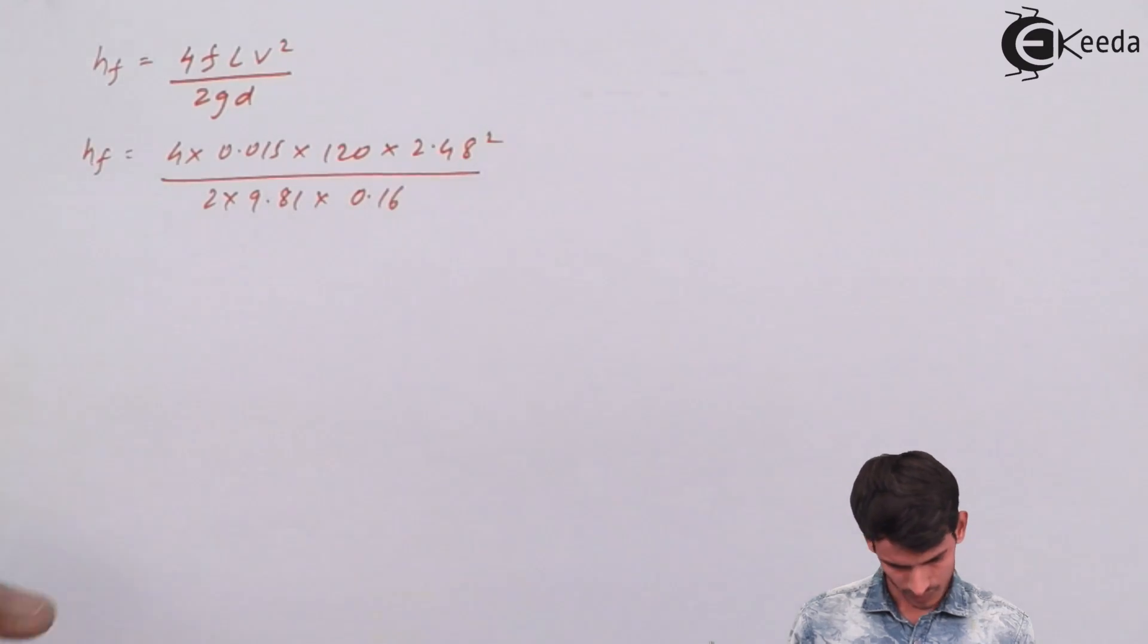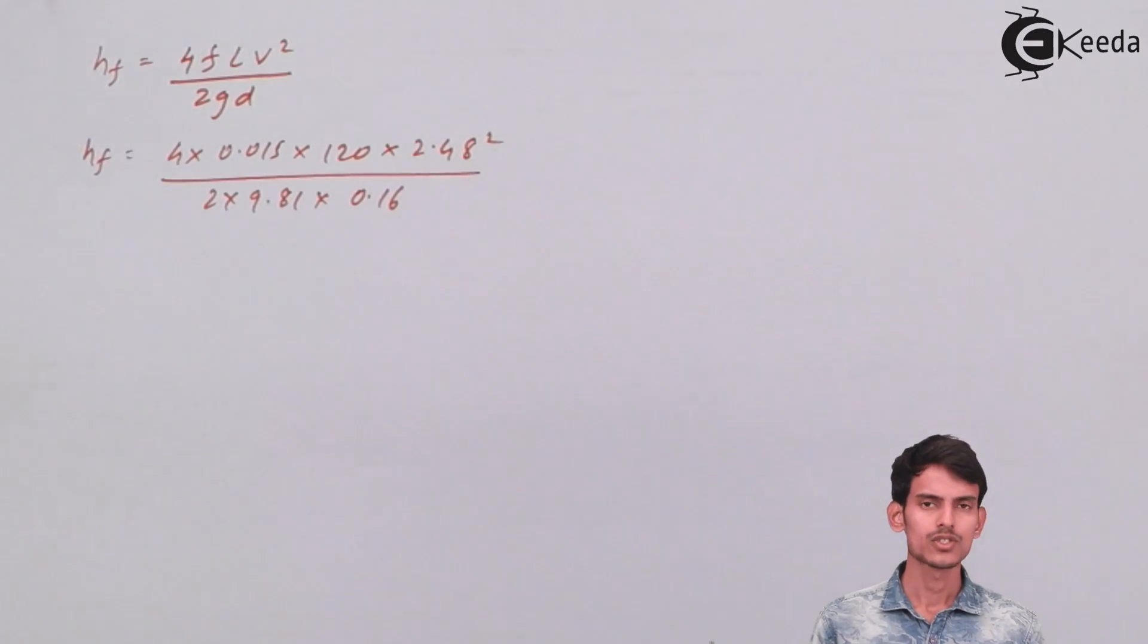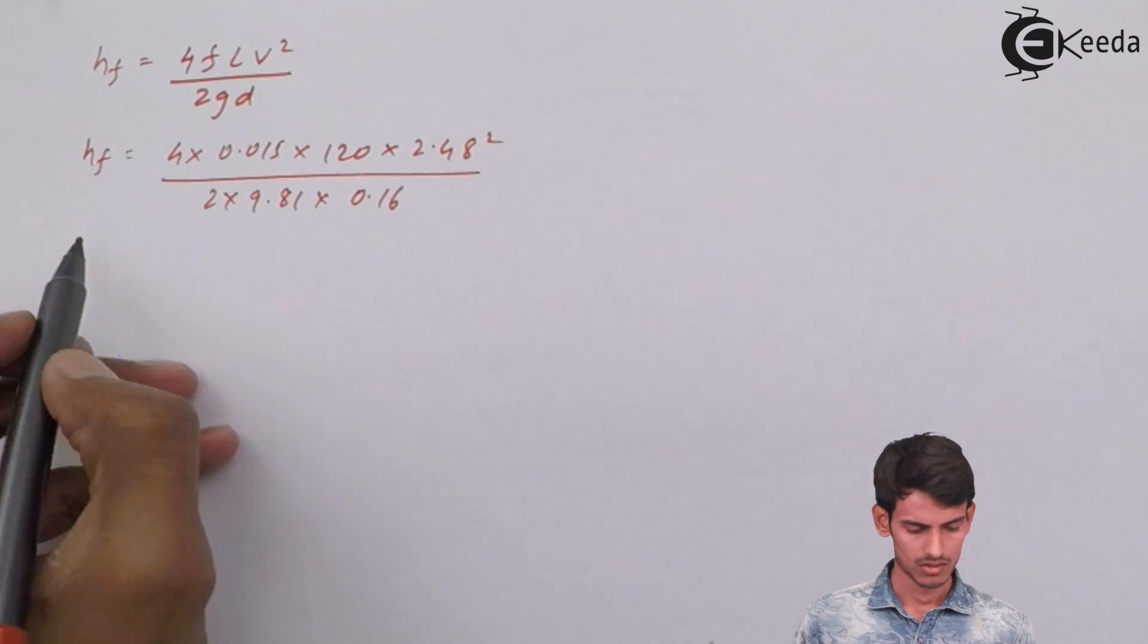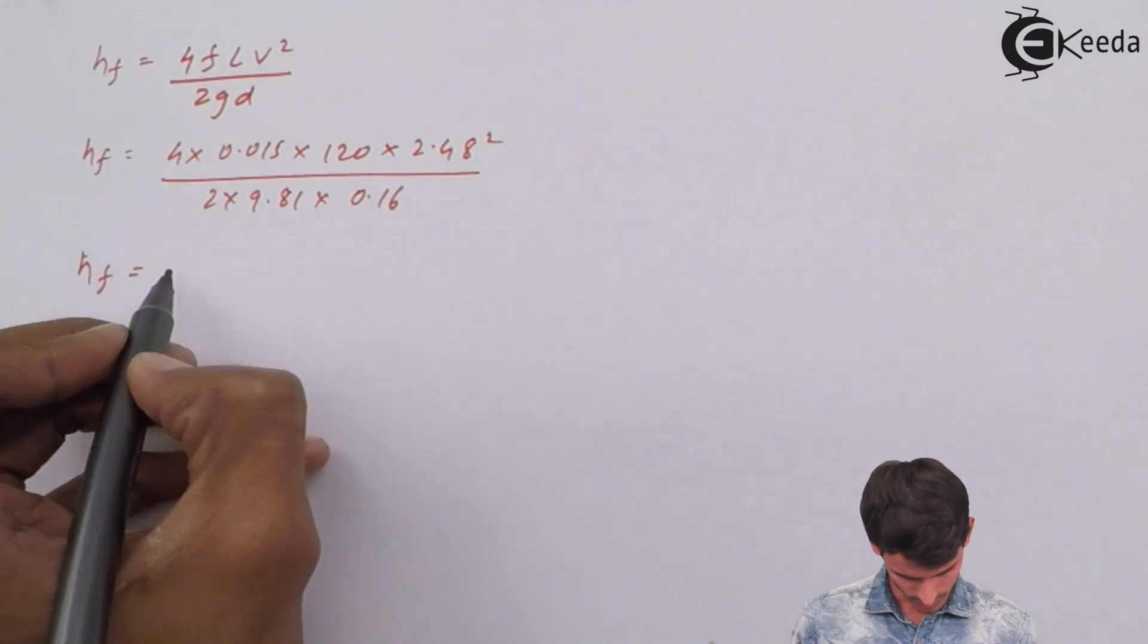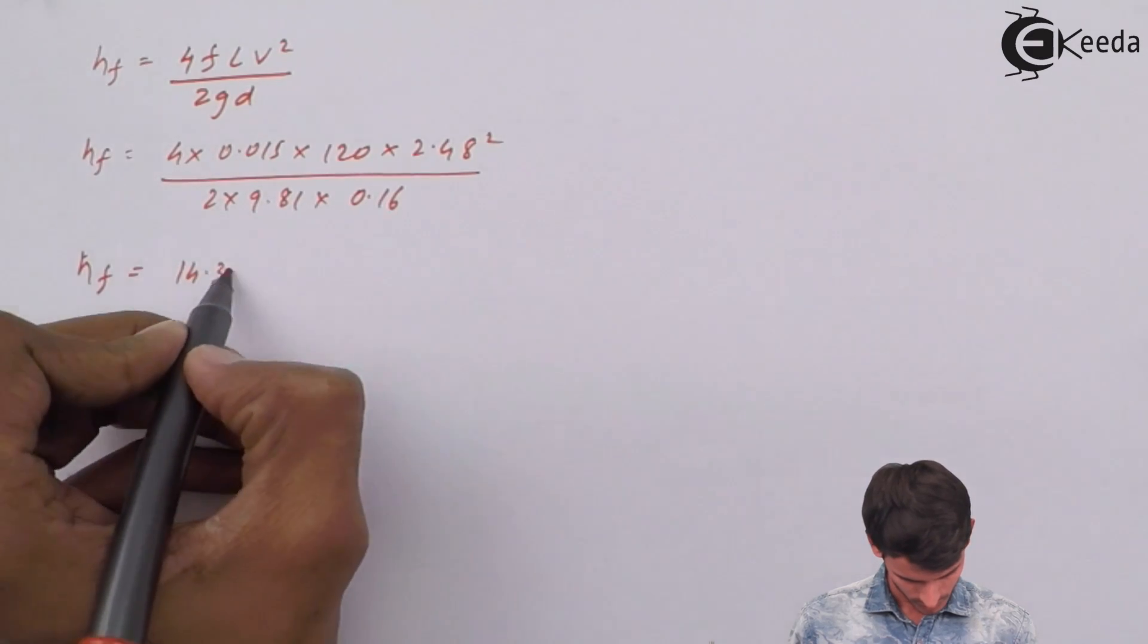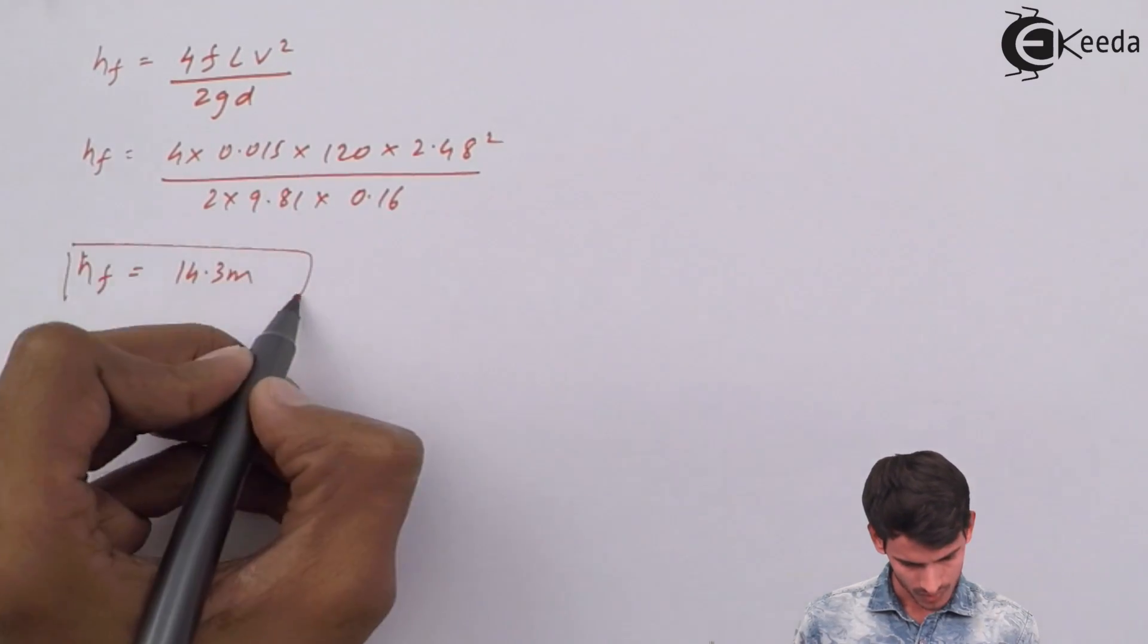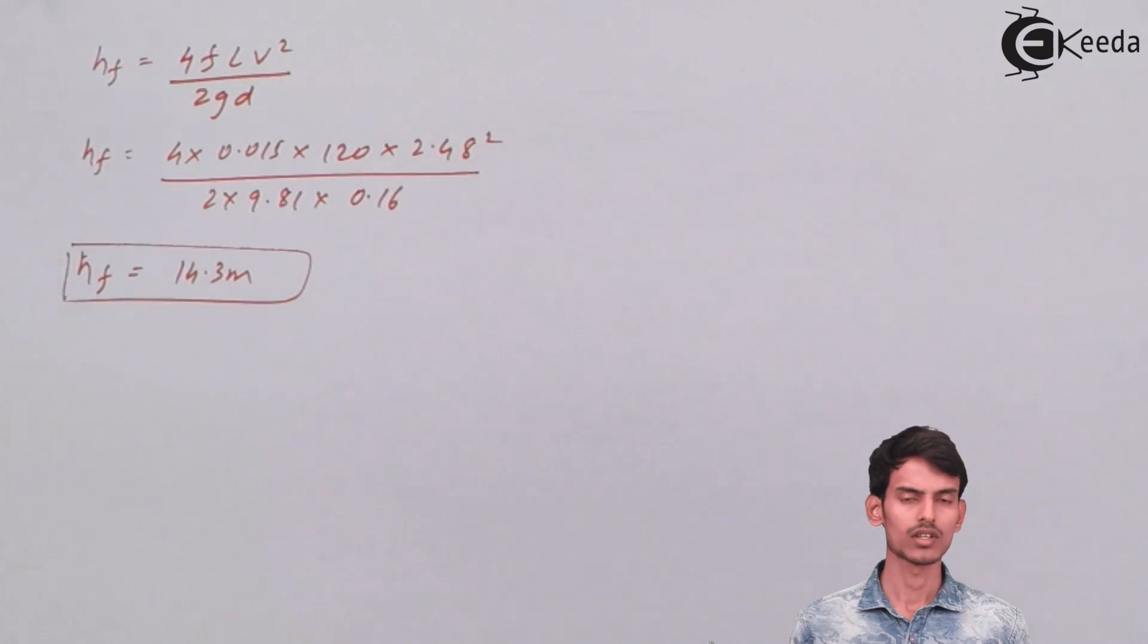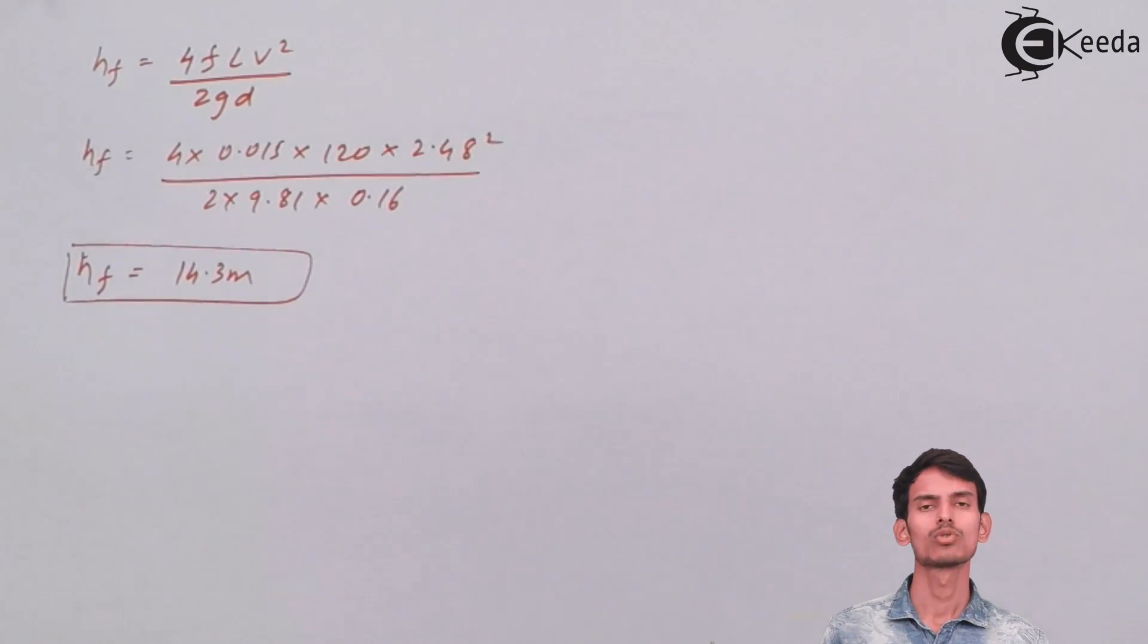Everything is known; you just need to multiply the numerator and then divide by the denominator. The hf comes out to 14.3 meters.